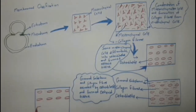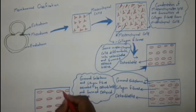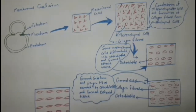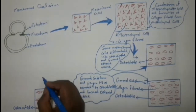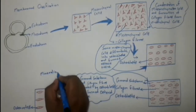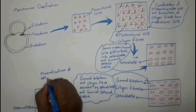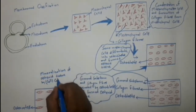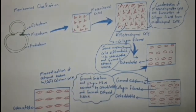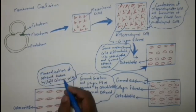The next step is mineralization of osteoid tissue with calcium salts. Here, mineralization of the osteoid tissue with calcium salts results in the formation of bone.